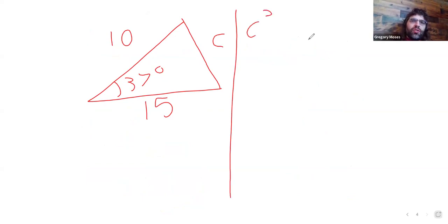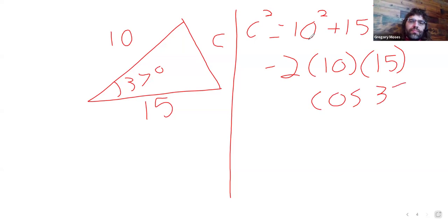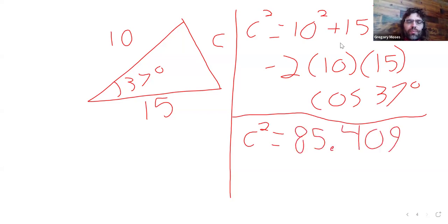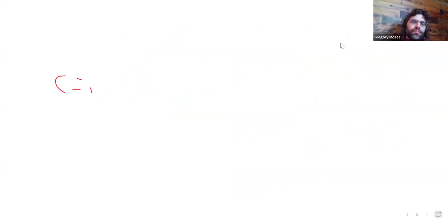Well, C squared is 10 squared plus 15 squared minus 2 times 10 times 15 times the cosine of 37 degrees. Taking that right hand side and plugging it into a calculator. Here is C squared. So, C is the square root of 85.409.